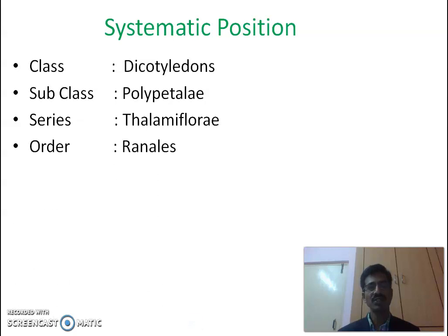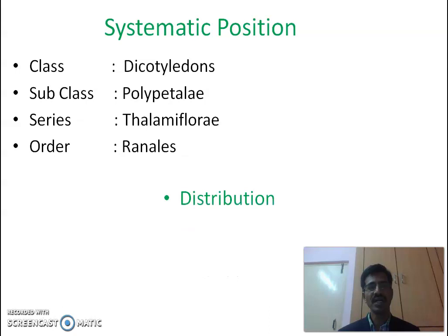It belongs to order Ranales. The main characters of Ranales are the numerous stamens and numerous carpels, and also an apocarpous condition is observed. Both the stamens and carpels are arranged spirally. These are the identification characters of the order Ranales.